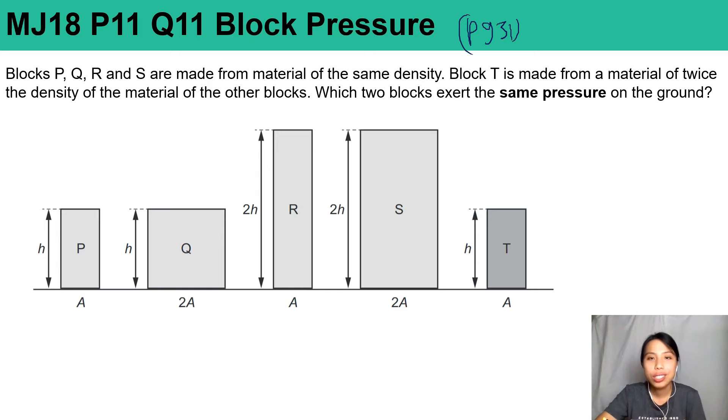Blocks P, Q, R, and S are made from material of the same density. Block T is from material of twice the density, so twice the density.